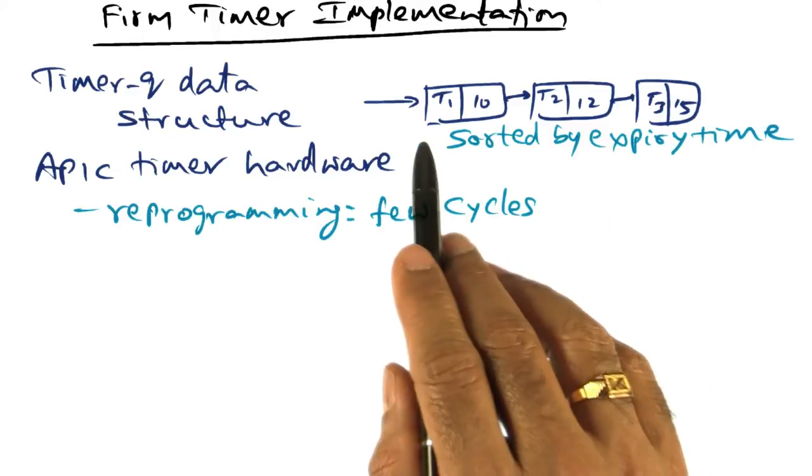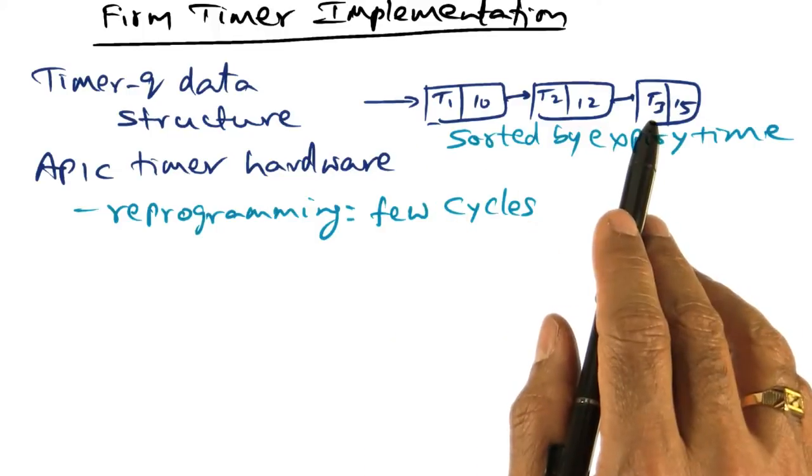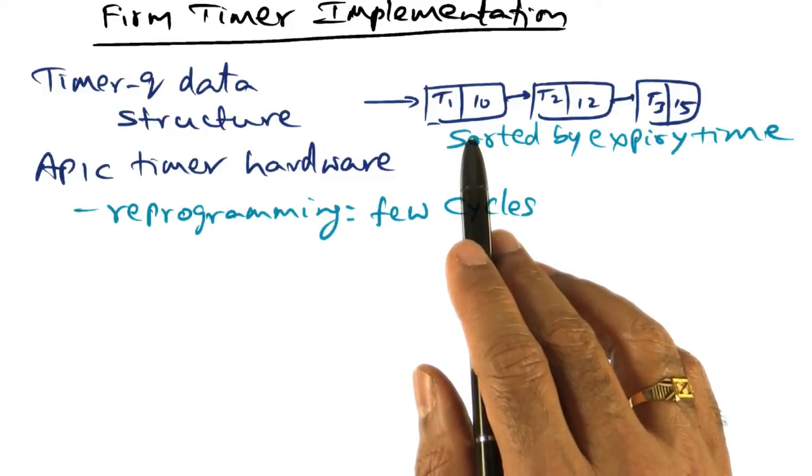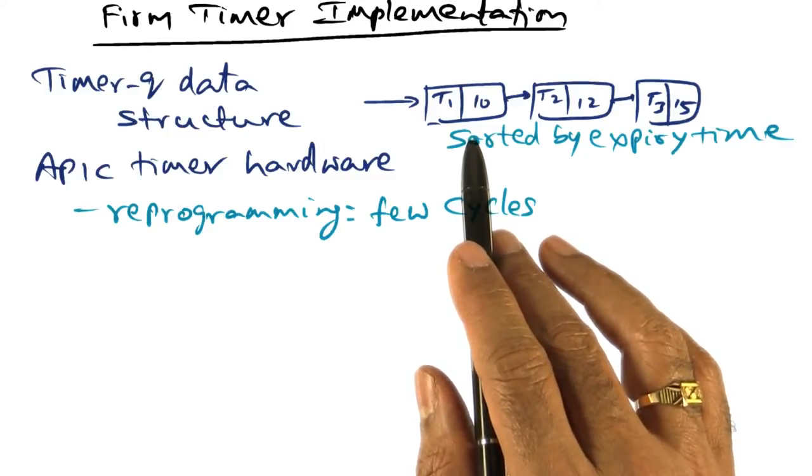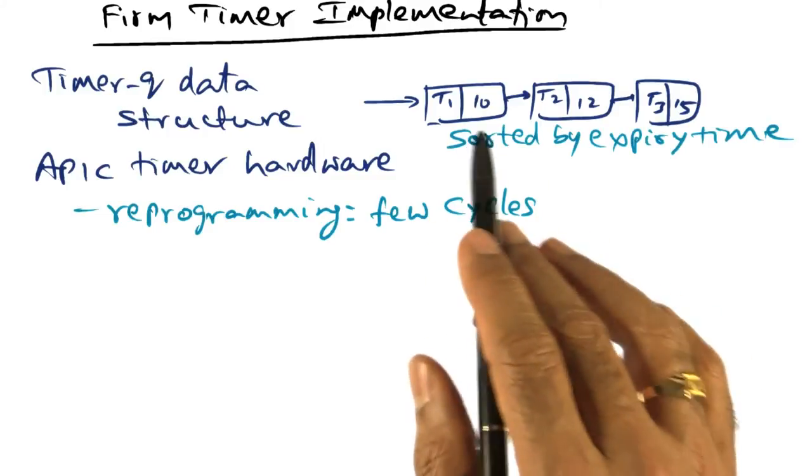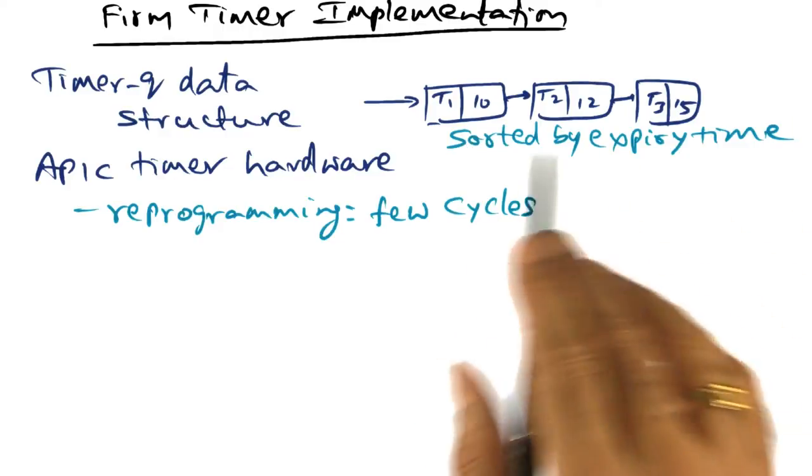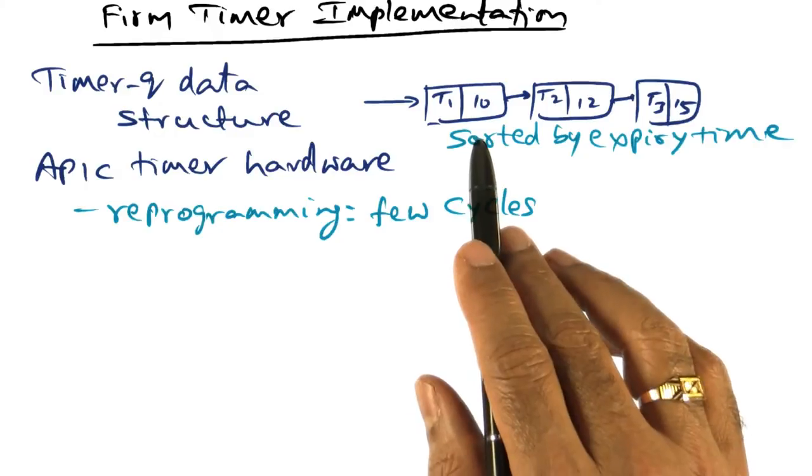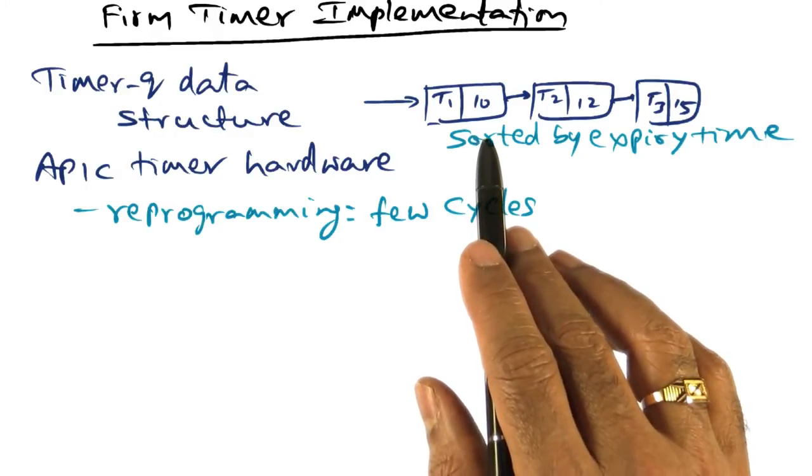The expired timers are removed from the timer queue data structure. If the entry corresponds to a periodic timer, then the handler will re-enqueue that particular task after updating its expiry field for the next periodic event.